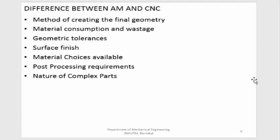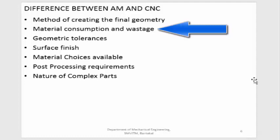What are the differences between additive manufacturing and CNC? The first difference is the method of creating the final geometry. In additive manufacturing, the print head or laser has to reach each point to create the component. In CNC, the tool has to reach the point, but since you have a solid material, every point may not be accessible. In additive manufacturing, since we build layer by layer, any point within the object can be reached.